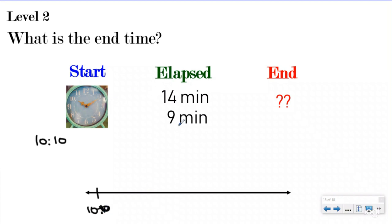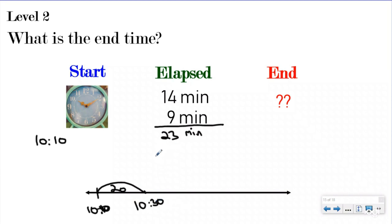I'm going to label 10:10 on my timeline. Because they gave me different pieces of elapsed time, I'll add those up first - 14 minutes plus 9 minutes is 23 minutes total. Just like our last question, I'm going to use a 20-minute hill first. That brings me to 10:30. You could do a 10-minute hill, or even 23 one-minute hills - you can break apart the minutes any way you want. I like to use friendly numbers like 10, 20, 5, or 30 - things that are easy to add as time.